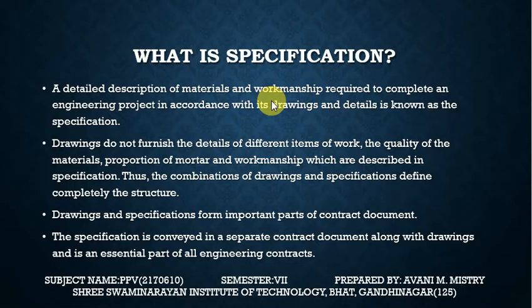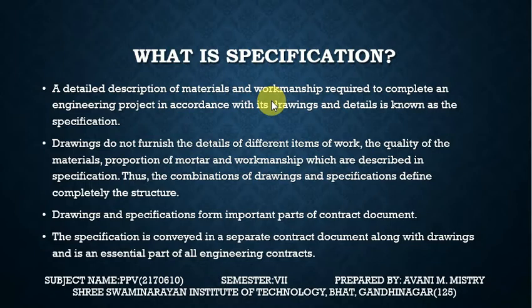To understand specification — what material is needed, how different items like RCC slab, RCC beam, brickwork, excavation should be done — that is called workmanship. How we construct these different items is called workmanship, and that is why specification is needed.